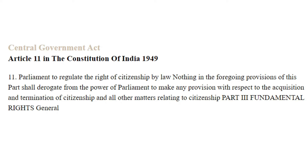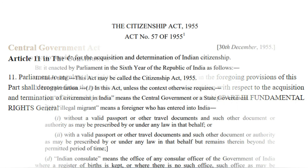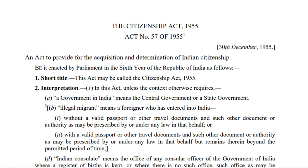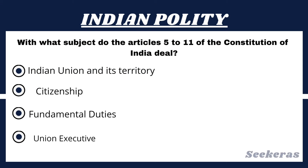It was in exercise of this power that the Citizenship Act 1955 was enacted. Question number 4: With what subject do Articles 5 to 11 of the Constitution of India deal? Option 1, Indian Union and its Territory; Option 2, Citizenship; Option 3, Fundamental Duties; or Option 4, Union Executive. The answer is Option 2, Citizenship. Articles 5 to 11 of the Constitution deal with the concept of citizenship, which entails the enjoyment of full membership of any state in which a citizen has civil and political rights.